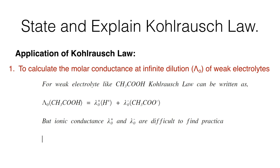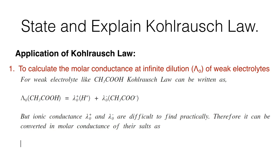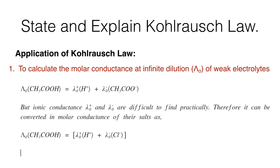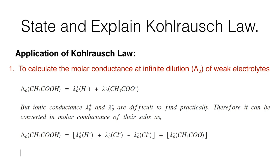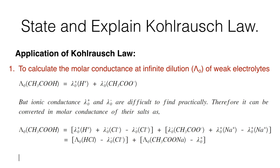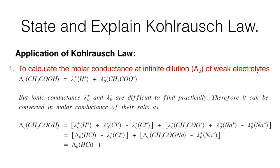Since ionic conductances λ⁰₊ and λ⁰₋ are difficult to find practically, it can be converted in terms of molar conductances of their salts: λ⁰(CH₃COOH) = λ⁰(H⁺) + λ⁰(Cl⁻) − λ⁰(Cl⁻) + λ⁰(CH₃COO⁻) + λ⁰(Na⁺) − λ⁰(Na⁺). This becomes λ⁰(HCl) + λ⁰(CH₃COONa) − λ⁰(NaCl).